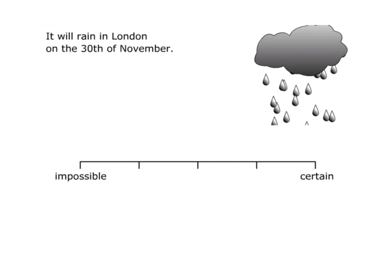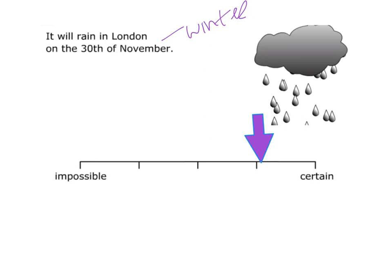The last one we're going to look at today: it will rain in London on the 30th of November. London and Ireland have a similar climate. In November, what would the chances of it raining here in Dublin be? Pretty likely. We get a lot of rain here in Ireland, the same in London, and November is one of the winter months. You could definitely get rain — it's not extremely likely, but it's definitely likely. So I would place it along the likely section, around here. London has a similar climate to Dublin, and in November we get a lot of rain.